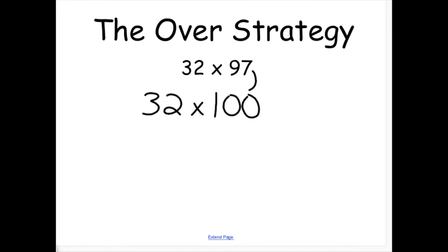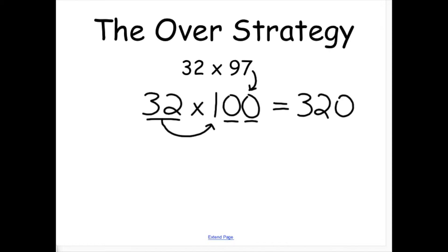I am going to go over my factor of 97 and multiply 32 times 100. This is an easier problem because I can get 100 groups of 32 pretty quickly. Now, I am only three groups away from my goal of 97 groups.